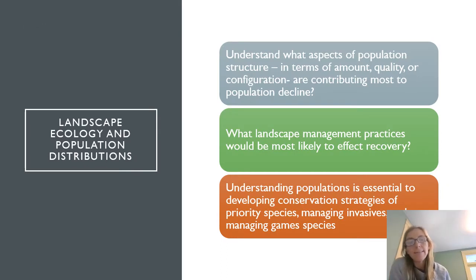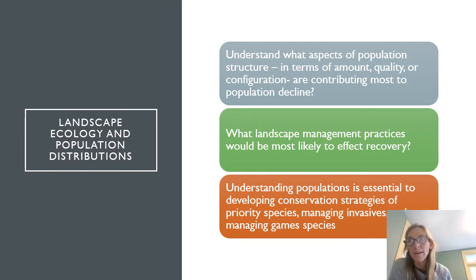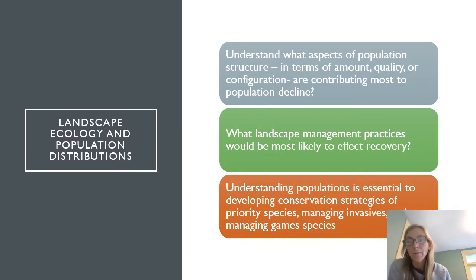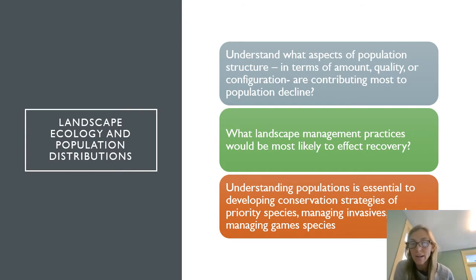When we think about population distributions through the lens of landscape ecology, a lot of this still builds upon island biogeography theory and metapopulation theory. We strive to understand what aspects of population structure — amount, quality, or configuration — contribute most to population decline, what landscape management practices would most likely affect recovery, and how to develop conservation strategies for priority species, invasive species, and game species.